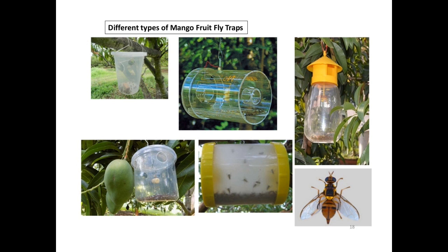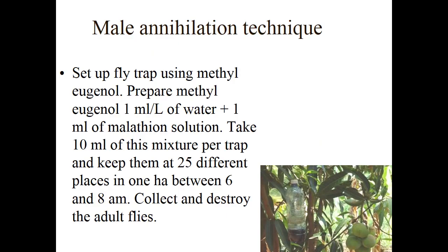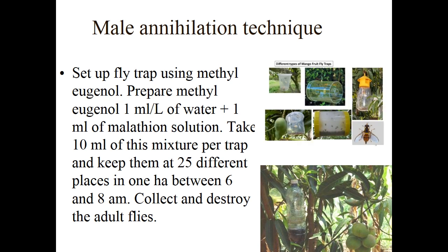Bait splash also reduces mango anthracnose disease and prevents late fruit fall. Physical control: hot water treatment at 48 ± 1°C for 4–5 minutes. Mechanical control is the male annihilation technique: prepare a fly trap using methyl eugenol at 1 ml/liter of water plus 1 ml malathion solution; take 10 ml of mixture per trap, place them at different locations in one hectare between 6 and 8 am; collect and destroy the adults.